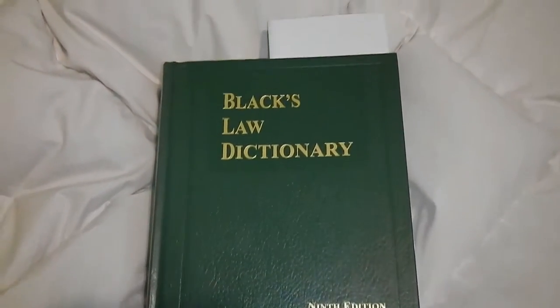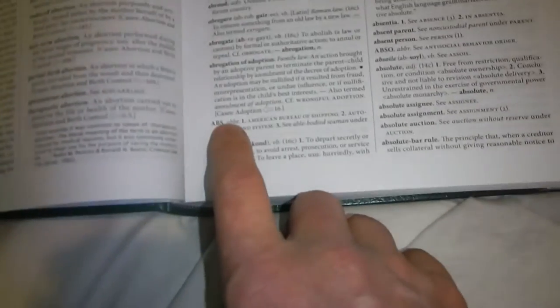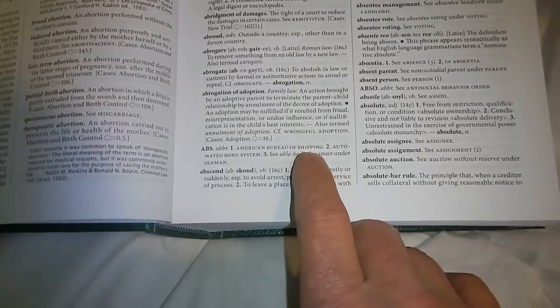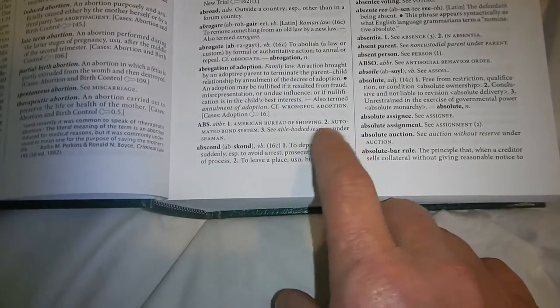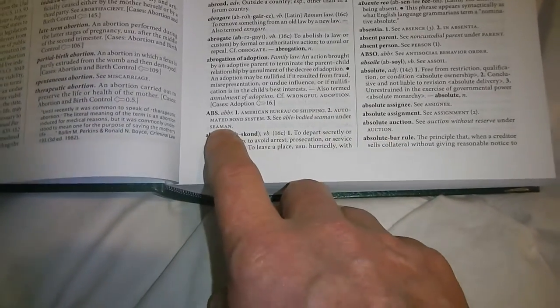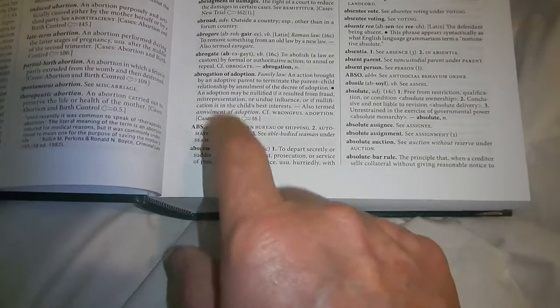Okay let's see what's on page seven. American Bureau of, haven't got the right reading glasses on, shipping Admiralty law. Automated bond system, that's what they buy and sell government bonds.